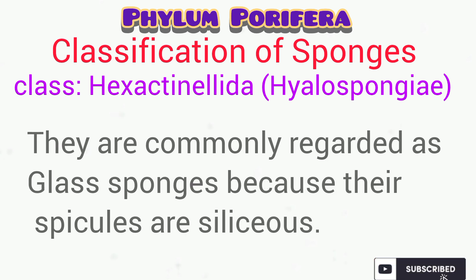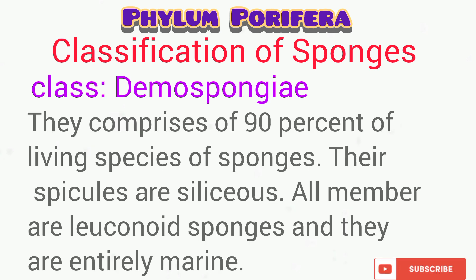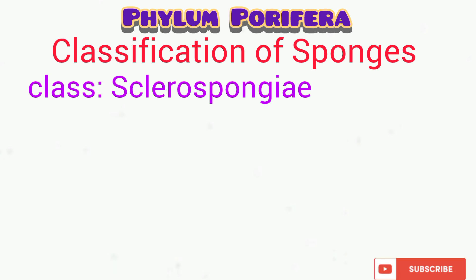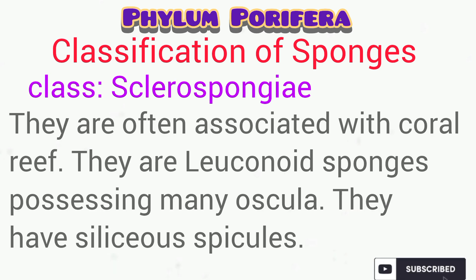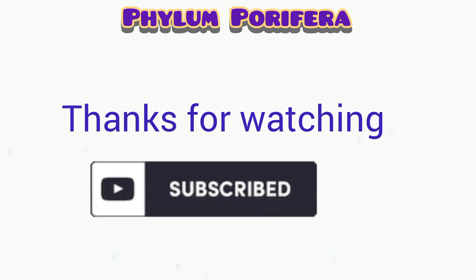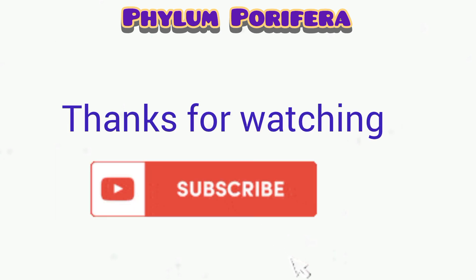The Hexactinellida are commonly regarded as the glass sponges and they usually possess radial symmetry; note that their spicules are siliceous. Ninety percent of the living sponge species are found in the class Demospongiae; they also possess siliceous spicules. Species in the fourth class, Sclerospongia, are often associated with coral reefs in various regions of the world and often possess numerous oscula. This is the end of the summary of the phylum Porifera. Please subscribe to support this channel.